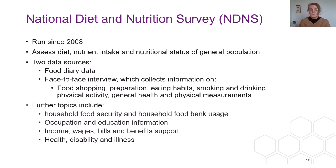Next up is the National Diet and Nutrition Survey, also known as the NDNS. This survey has been run continuously since 2008 and is designed to assess the diet, nutrition and nutritional status of the general population. The data comes from two sources: individual food diary data and a face-to-face interview. This face-to-face interview collects more detailed information on food and habits in general — things like smoking and drinking, physical activity, and there are even some physical measurements recorded in there as well.